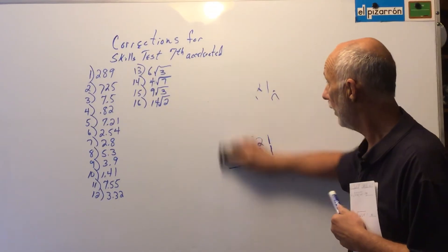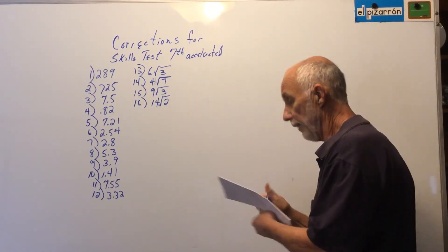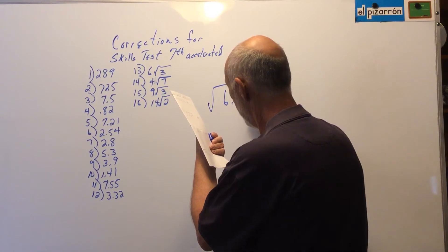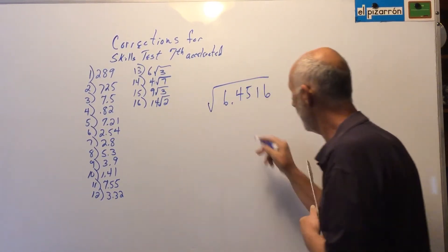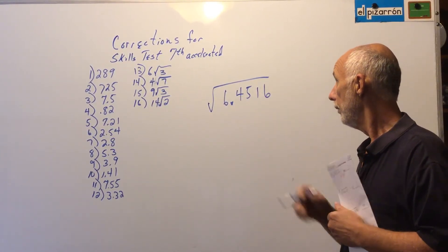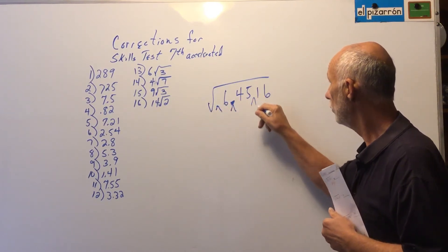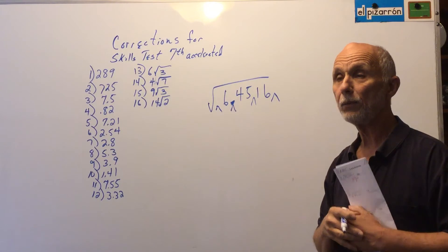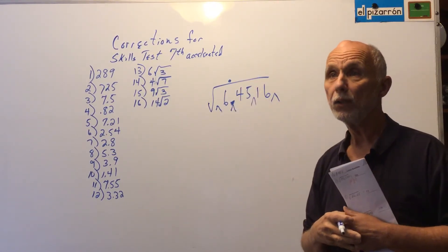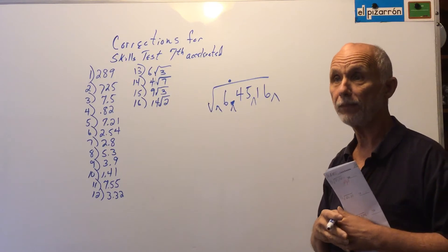The second problem is number six: the square root of a decimal — 6 and 4,516 ten-thousandths. You use the algorithm and mark off every two places from the decimal: one place in the front, two places and two places in the back. One important thing — don't forget to bring the decimal point up. One person who got a D would have gotten an A if they had brought the decimal point up every time, but they forgot.